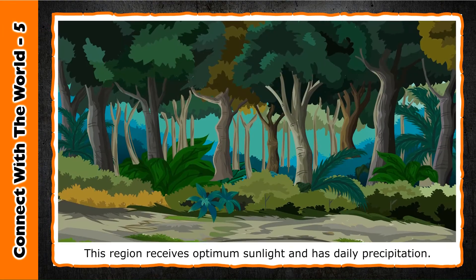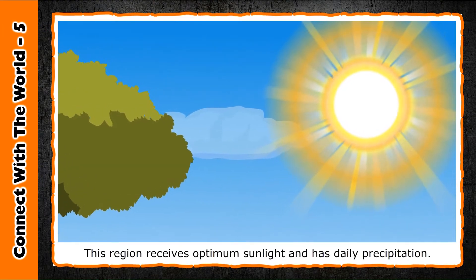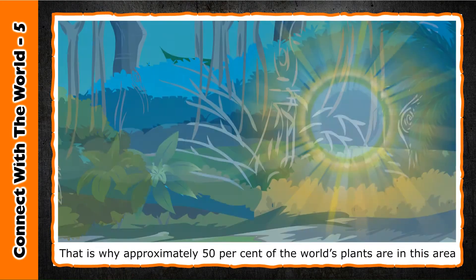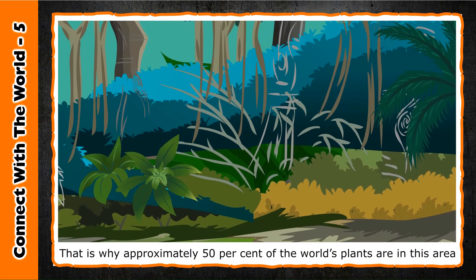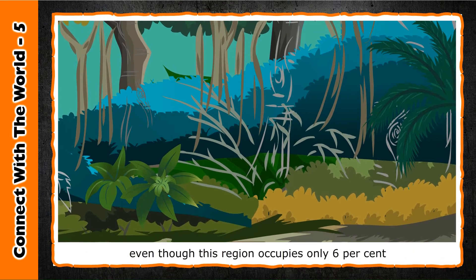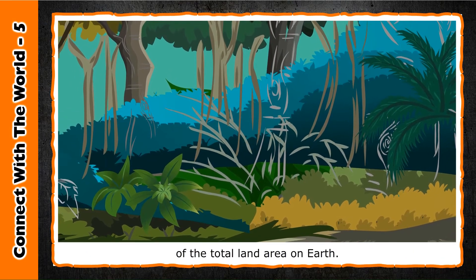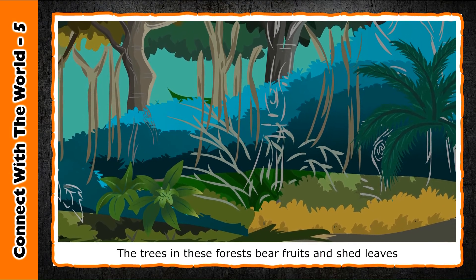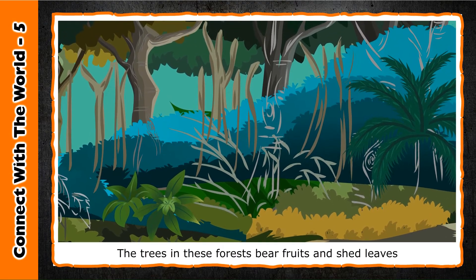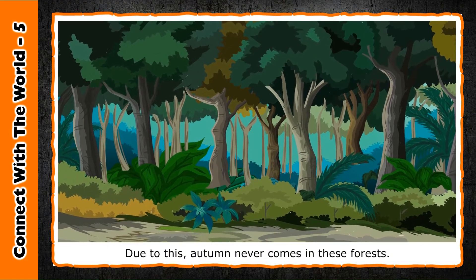Vegetation: This region receives optimum sunlight and has daily precipitation. That is why approximately fifty percent of the world's plants are found in this area, even though this region occupies only six percent of the total land area on earth. The trees in these forests bear fruits and shed leaves, but at different times of the year.